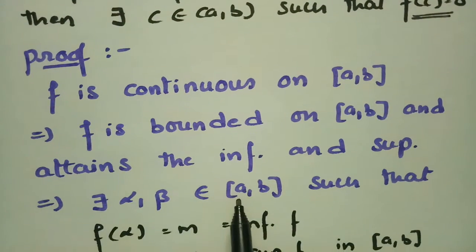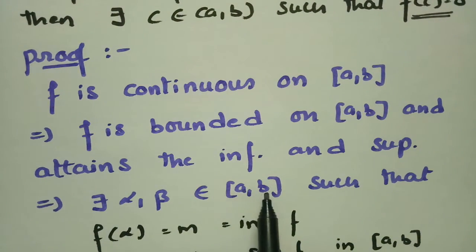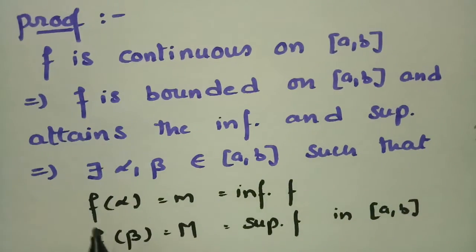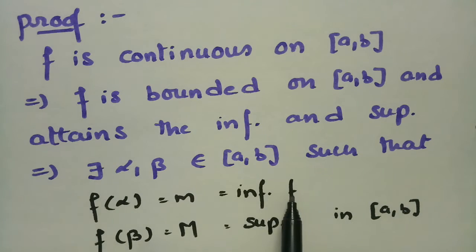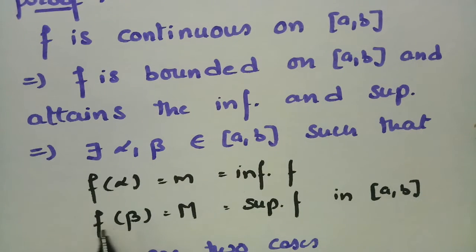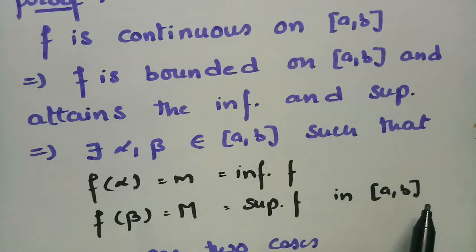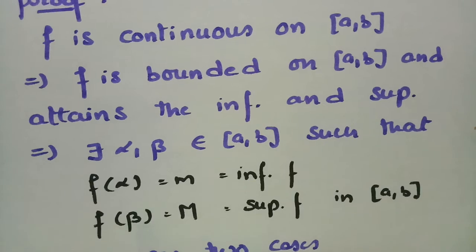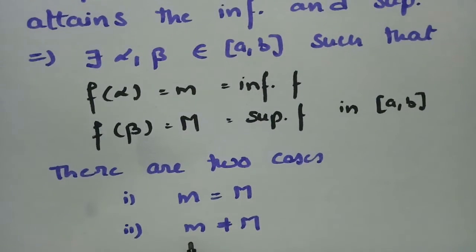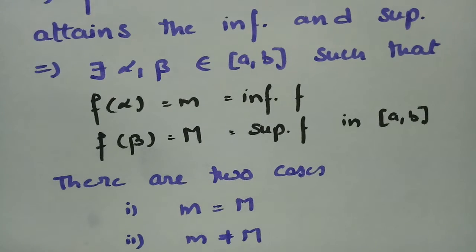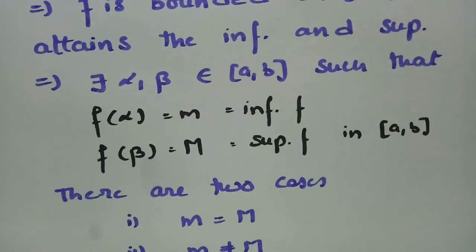So there exist points α and β in [a,b] such that f(α) gives the infimum value, small m, which is the infimum of f, and f(β) equals capital M, which is the supremum of f on closed [a,b]. This gives rise to two cases: either infimum equals supremum, or infimum is not equal to supremum, and we have to prove Rolle's theorem in both cases.